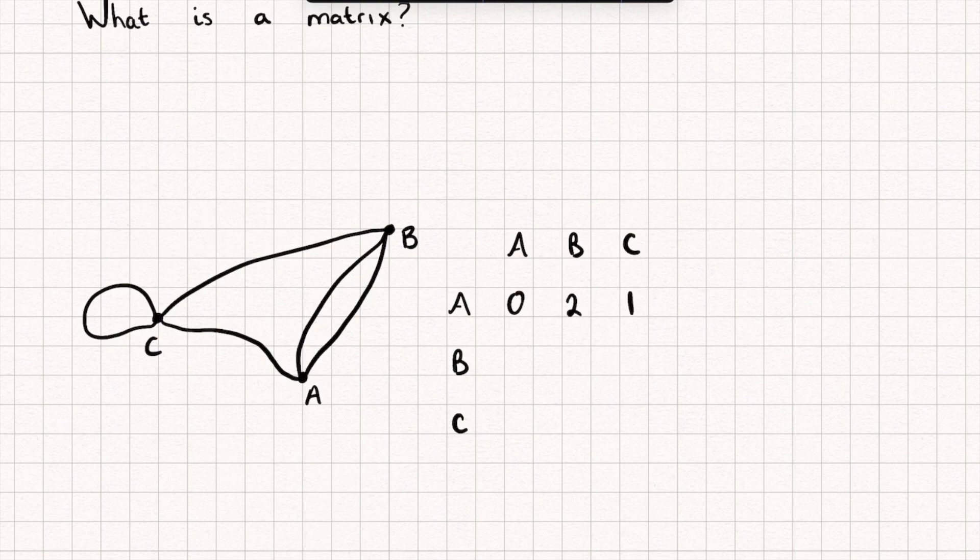Let's now do the second row. How many roads are there connecting town B to A? That's two. B back to itself is zero, and B to C is just one. And finally, how many roads connecting C to A? That's one. C to B is also one. And you can see there's this curly road here that leaves town C and arrives back to it, so there's one road connecting town C to itself.